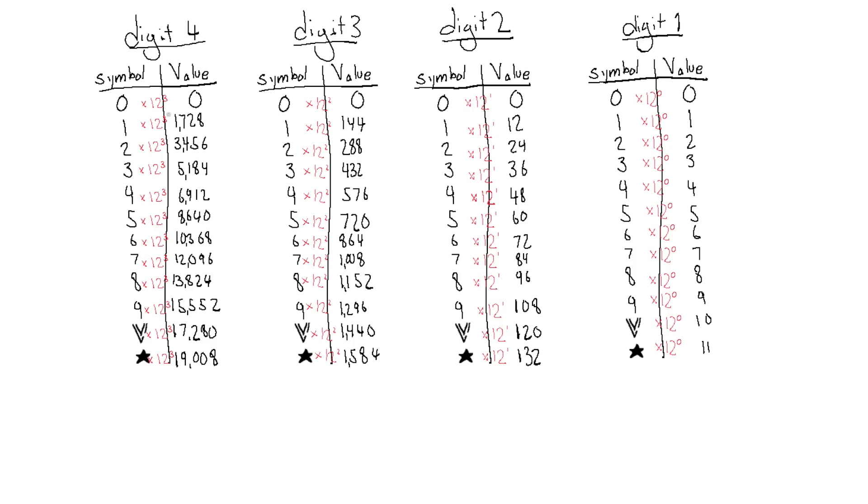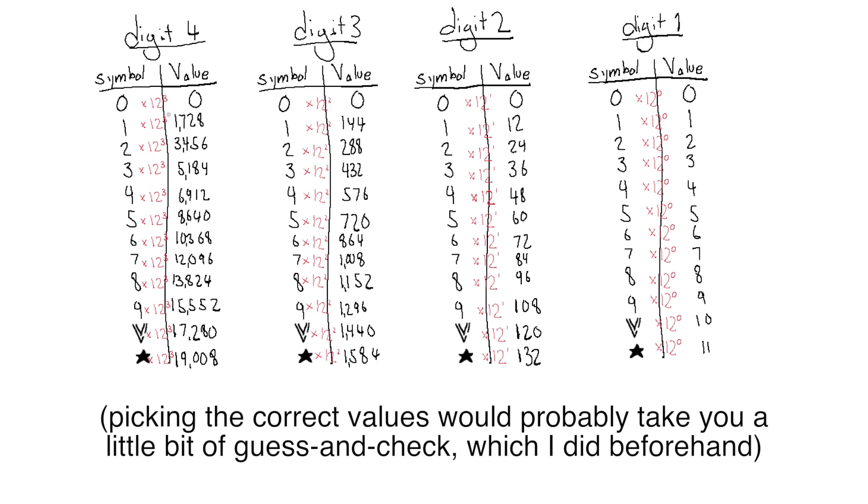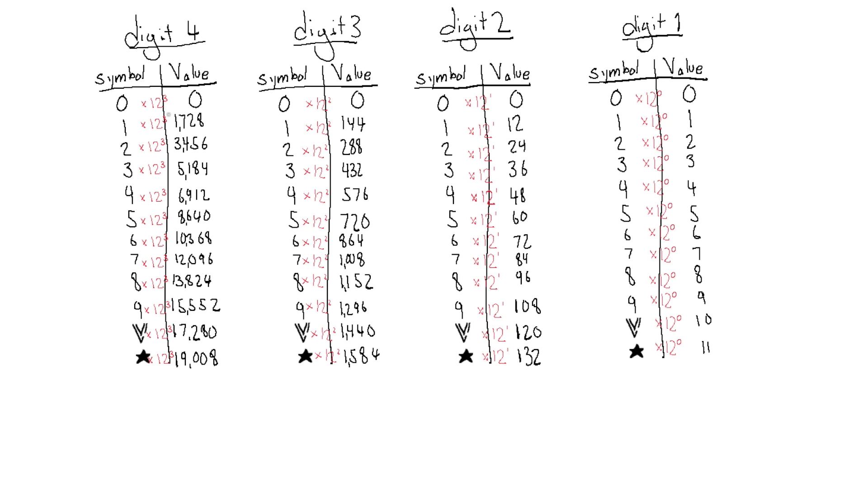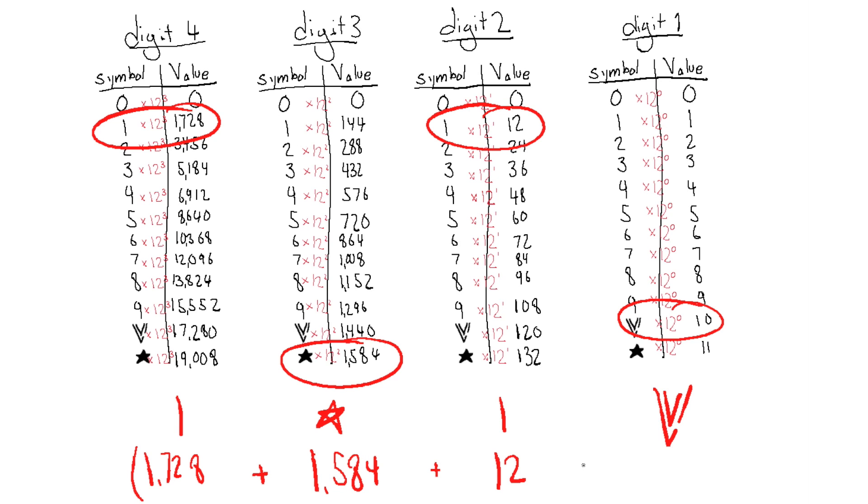So now let's finally write out the equivalent of base 10's 3191 in base 12. We're going to do the same thing we did before. Pick the values we need to add together to get that number, and then pick the corresponding symbols. When we do this, our number is 1 star 1 Vsauce logo, or 1,728 plus 1,584 plus 12 plus 10, or in base 10, 3191.